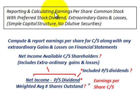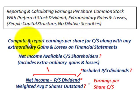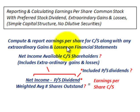What we're going to be going over here is reporting and calculating earnings per share for common stock where we have a preferred stock dividend, and we're also going to have some extraordinary gains and losses to deal with. It's going to be for a simple capital structure where there are no dilutive securities. We're going to compute and report the earnings per share for common stock along with any extraordinary gains and losses and how they would affect our earnings per share and how this would be reported in the financial statements.